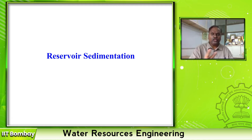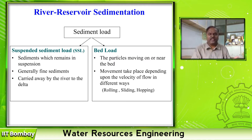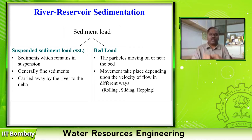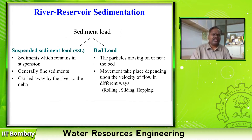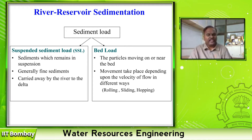For reservoir sedimentation, there are two types of sediments. One is bed load — huge boulders which are rolled by the water, brought to the site by rolling, sliding, and hopping. These are the different ways in which bed load is transferred from one location to another. The second one is suspended sediment, SSL. Sometimes coarse, medium, and fine sediments come as suspended sediment.